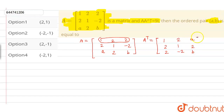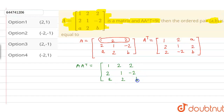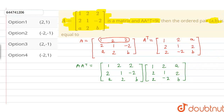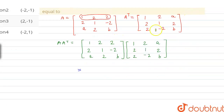Now we have to calculate the value of A matrix into A transpose, which is equal to 9I. So A into A transpose is the multiplication of matrix A — which is rows 1, 2, A; 2, 1, minus 2; A, 2, B — with the transpose matrix: columns 1, 2, 2; 2, 1, minus 2; 2, A, B. We multiply rows with columns respectively.